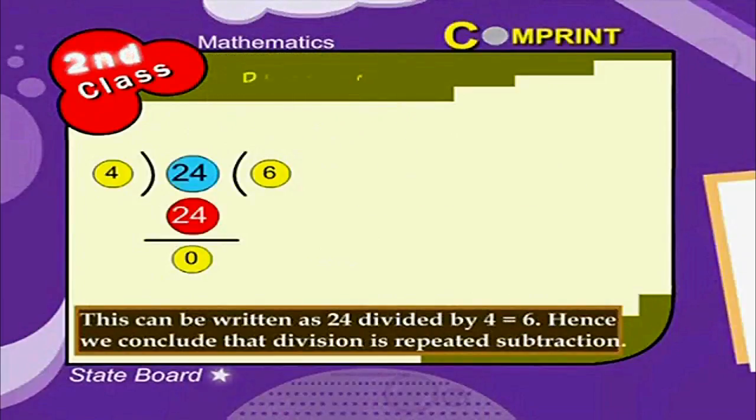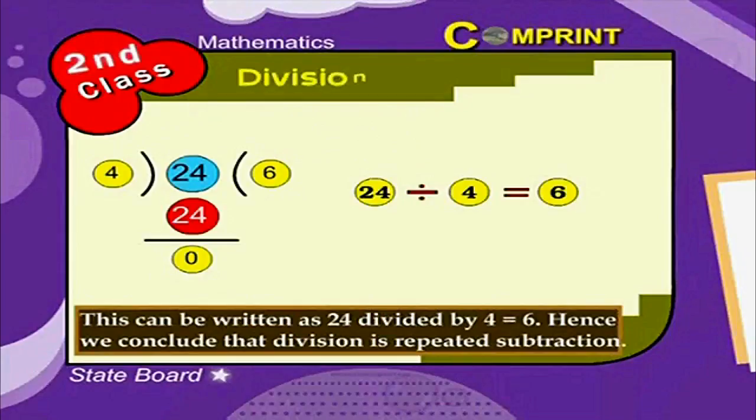This can be written as 24 divided by 4 is equal to 6. Hence, we conclude that division is a repeated subtraction.